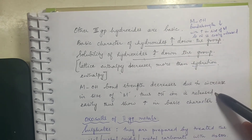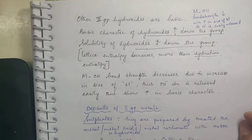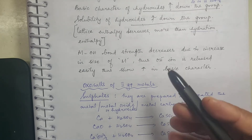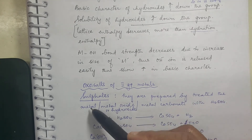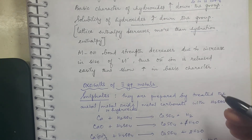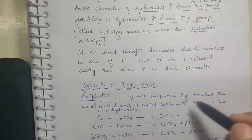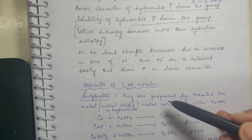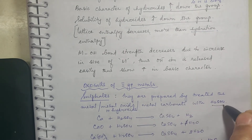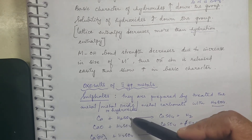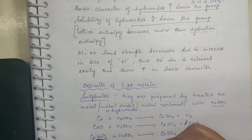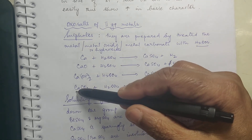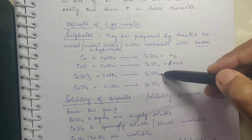Now for oxo salts of second group elements — sulfates are oxygen-containing salts, for example Na2SO4. They are prepared by treating either the metal, metal oxide, metal hydroxide, or metal carbonate with sulfuric acid. In any of these cases you can get the corresponding sulfate.